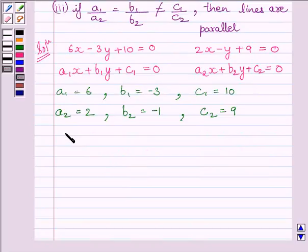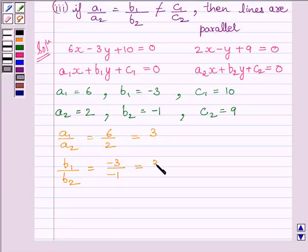Now, a₁ upon a₂ equals 6 upon 2 which equals 3, b₁ upon b₂ equals minus 3 upon minus 1 which equals 3, and c₁ upon c₂ equals 10 upon 9.